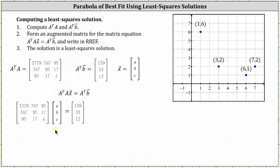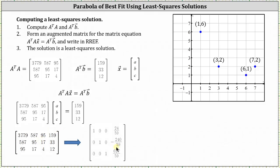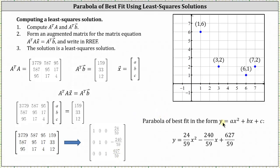The next step is to write the augmented matrix and reduce it to reduced row echelon form. The first row indicates a equals 24/59, the second row indicates b equals −240/59, and the third row indicates c equals 627/59. Therefore, the parabola of best fit is y equals (24/59)x squared minus (240/59)x plus 627/59. Graphing this on the coordinate plane containing the four given points, notice how the parabola is an excellent fit. I hope you found this helpful.